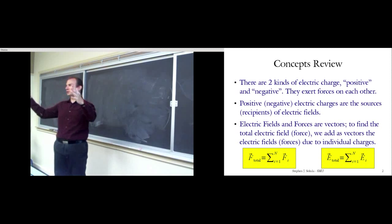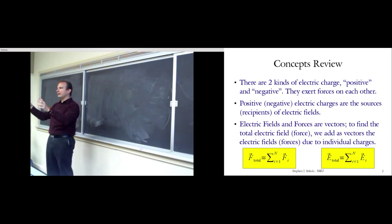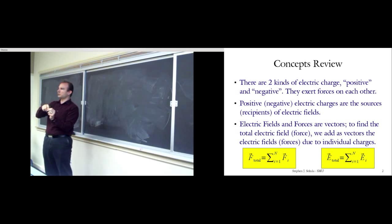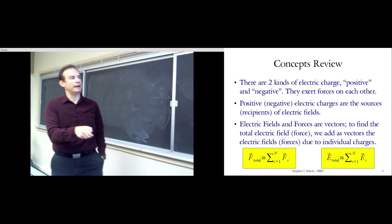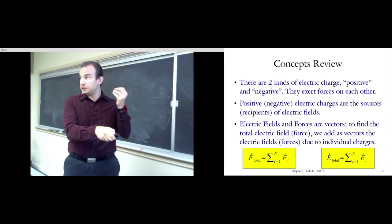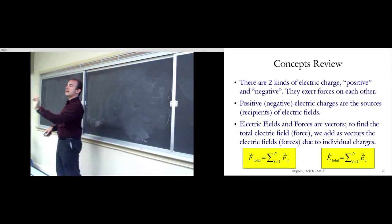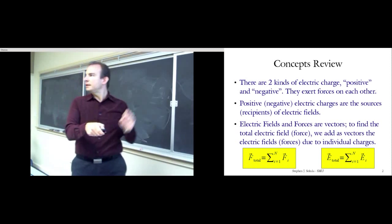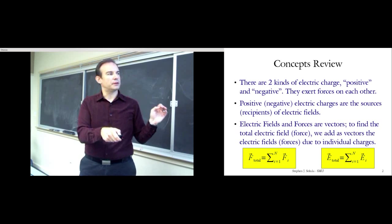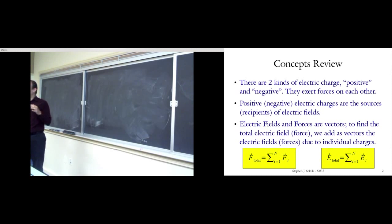To find the total electric field or electric force, we add as vectors the electric fields or forces due to the individual charges. Imagine you have 10 charges — you can do that by hand, though it's awful. To get the total force that the other 9 exert on the 10th, you sum up: force of 1 on 10, 2 on 10, 3 on 10, and so forth. You wind up getting a sum from i=1 to 9 of the Coulomb forces of each charge on that 10th one.